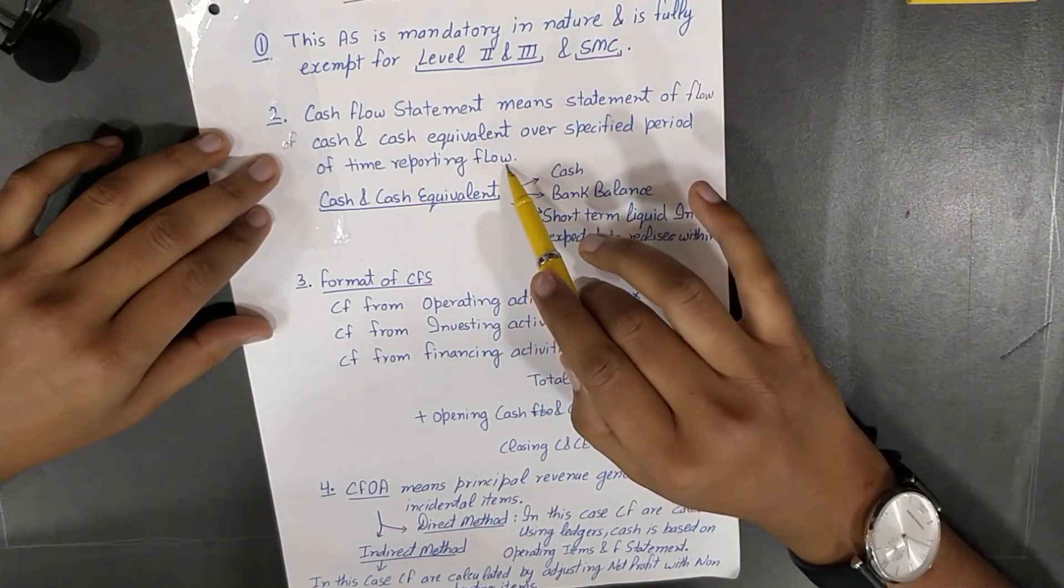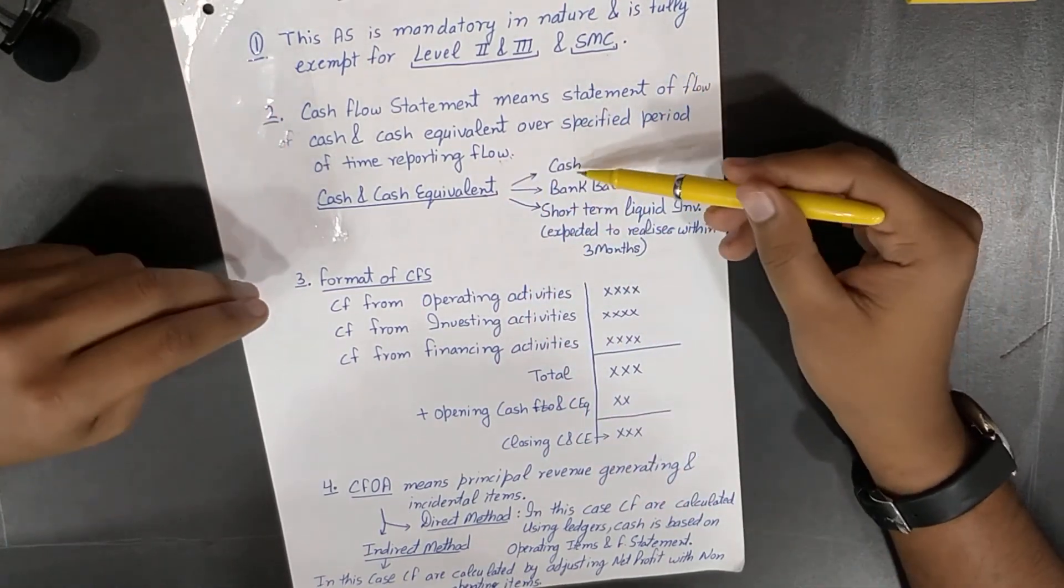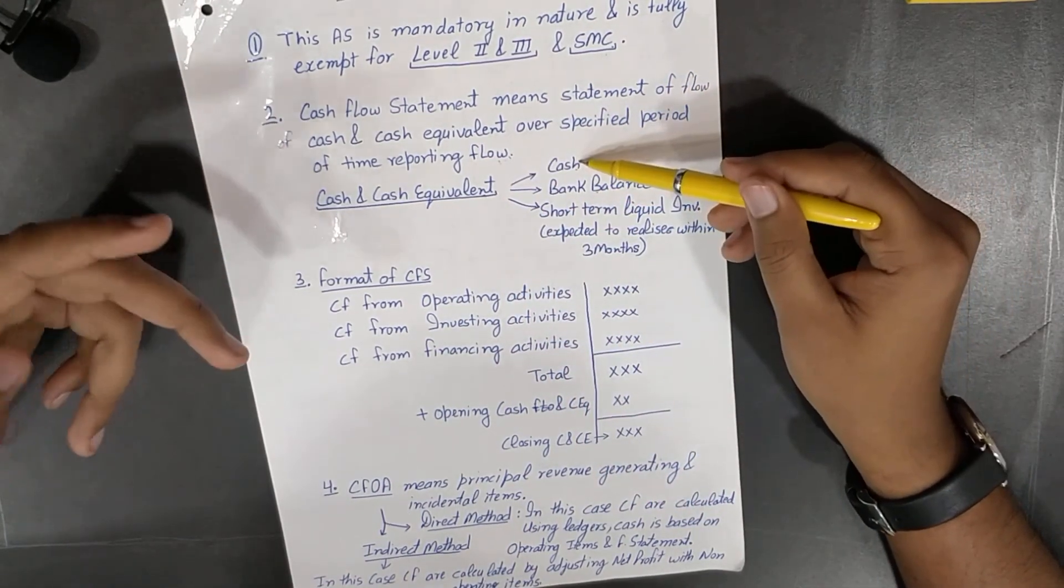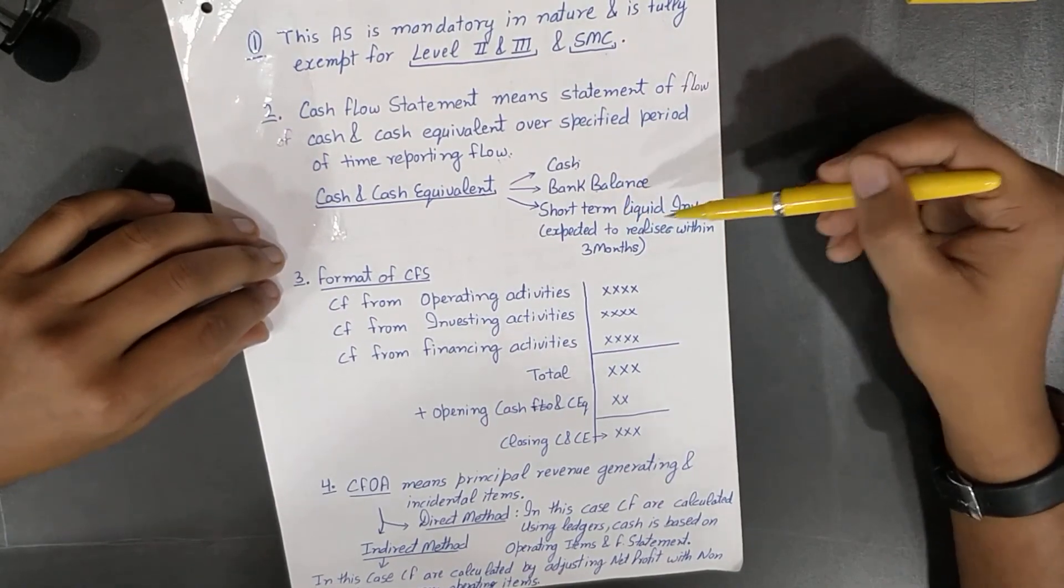Cash flow statement means statement of flow of cash and cash equivalents over a specified period of time of reporting flow. Cash equivalent can contain three things: bank, cash of course, and short-term liquid investments expected to be realized within three months. Very important.